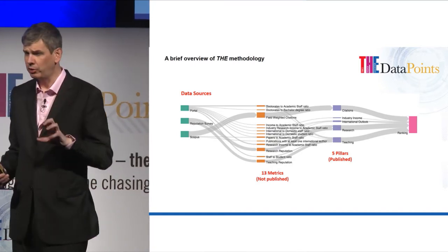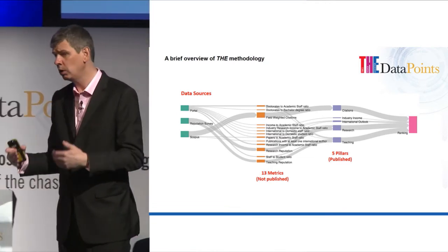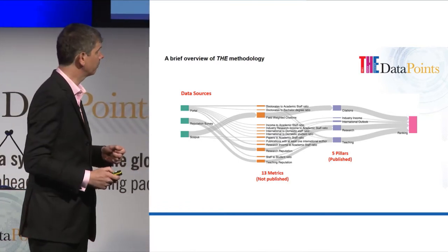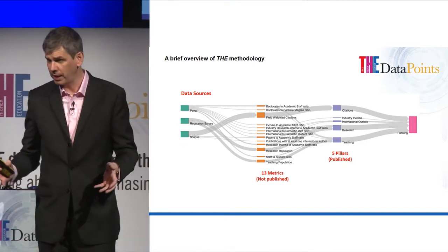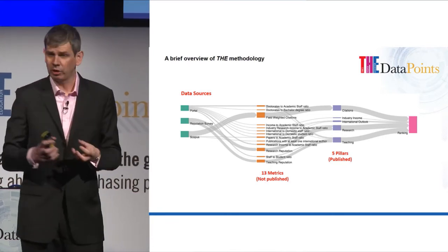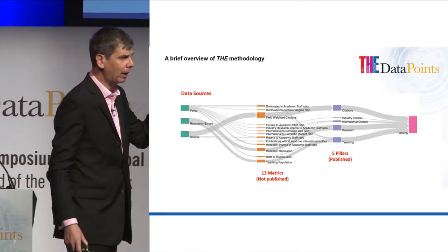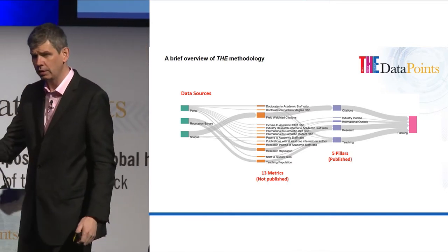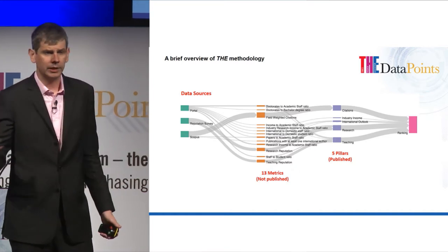Most of those are relative measures — you get nothing particularly for being a large institution. In fact, the top institution in the world according to our rankings is Caltech, which is very small and very focused. Those 13 measures are then grouped. We do some Z-scoring — essentially a way of allowing us to combine measures that don't measure very similar things. We combine those into five broad areas: teaching, research, citations, industry income, and international outlook.